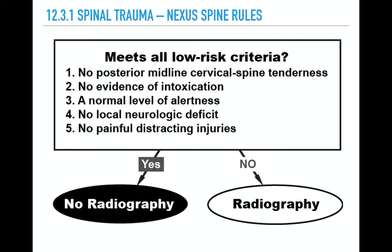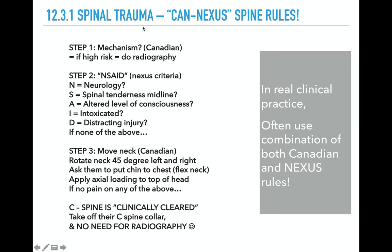Then there's the Nexus C-spine rules. There are five criteria. The way to remember Nexus is with NSAID. So if the patient has neurological deficit, spinal tenderness in the midline, altered level of consciousness, intoxication, or distracting injury — if they have any of these, then you need to do some imaging. If they have none of these, then they are at low risk of having a fracture.